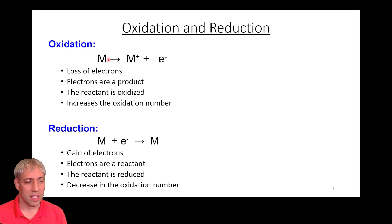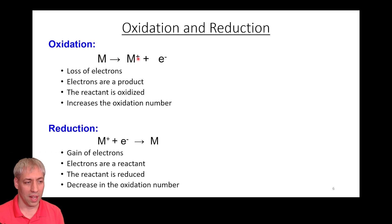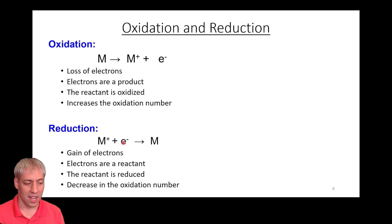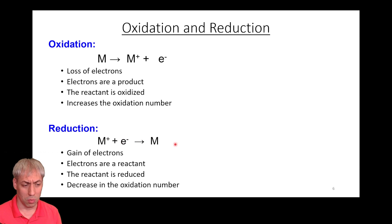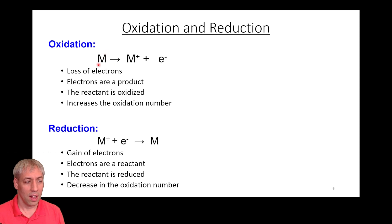There are different ways to describe this. Oxidation is losing electrons — electrons are a product, and the reactant is oxidized, going from M⁰ to M⁺, increasing the oxidation number. For reduction, electrons are a reactant — M⁺ gains an electron to give M⁰, representing a decrease in oxidation number from +1 to 0. It can also be +2 to +1; all that's happening is an electron is being given to that species.